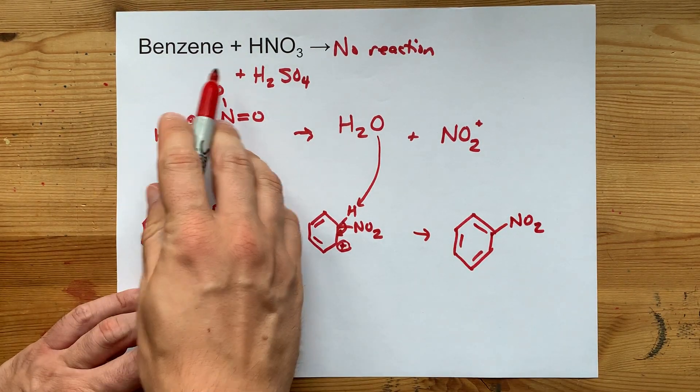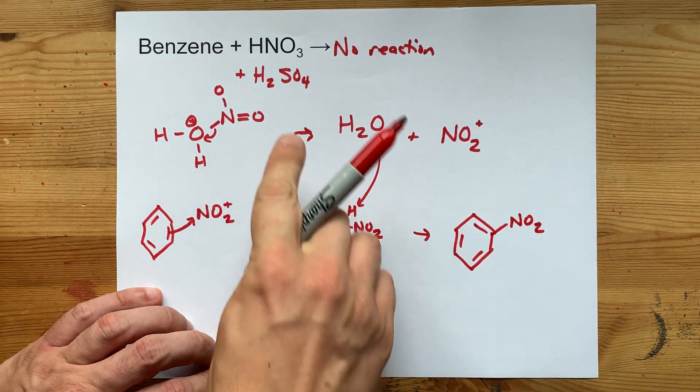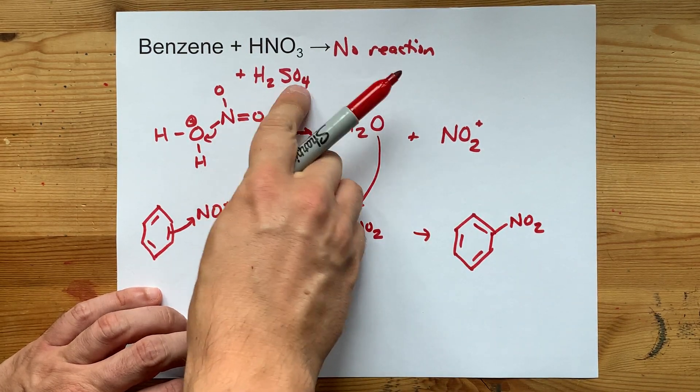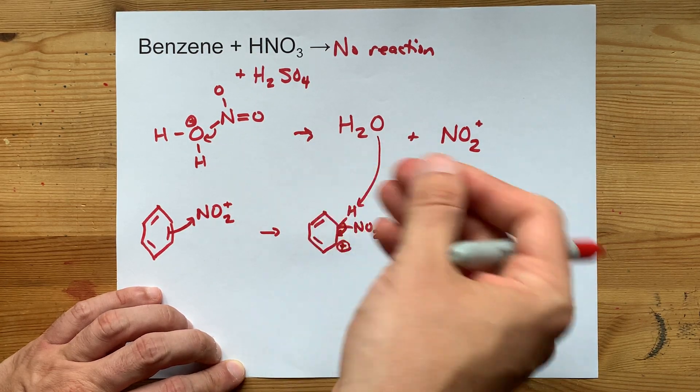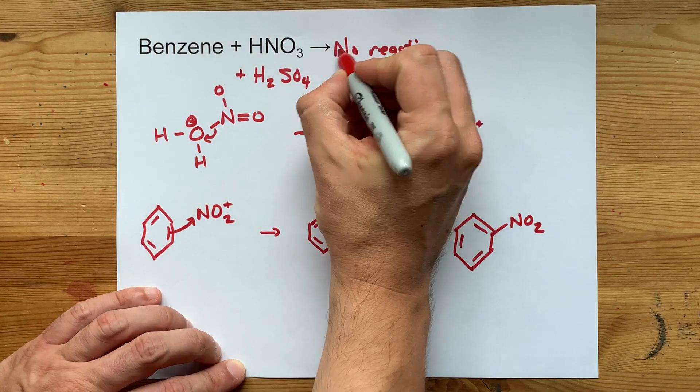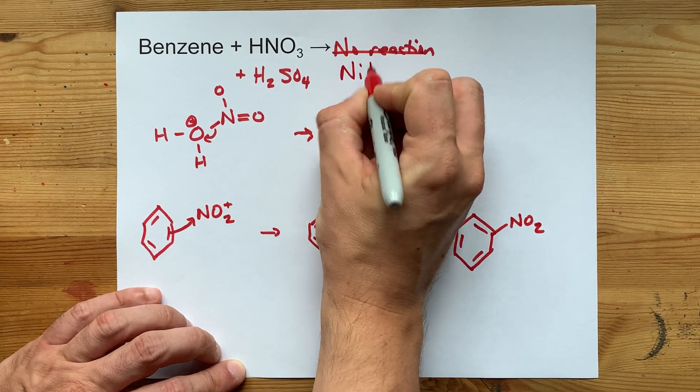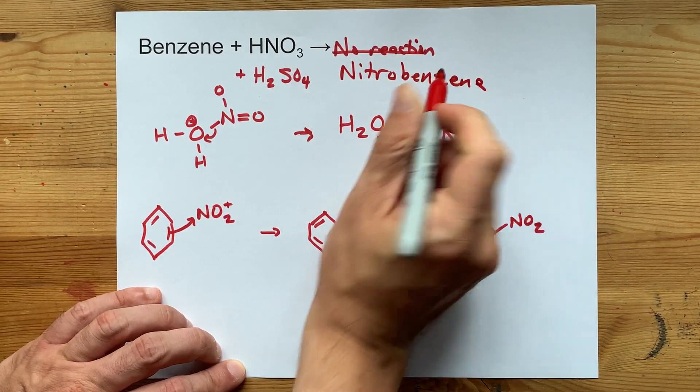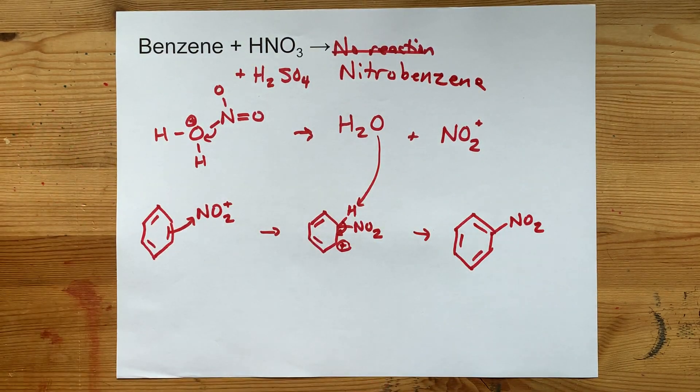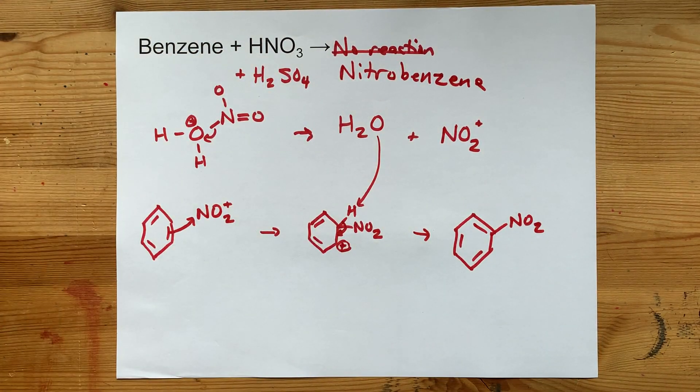So benzene does not react with nitric acid, but with concentrated sulfuric acid in the mix, you can form NO2 plus ions in solution, and therefore the answer becomes nitrobenzene. That's probably the answer your teacher is looking for. Thank you for being with me and best of luck.